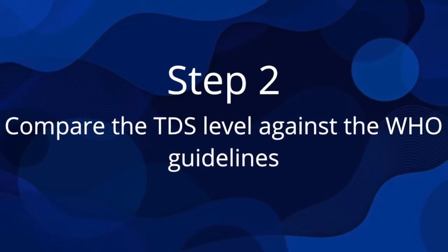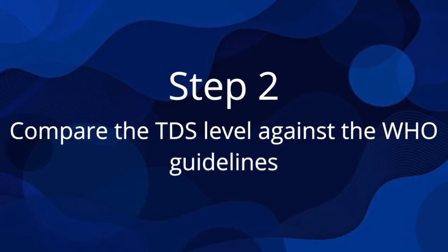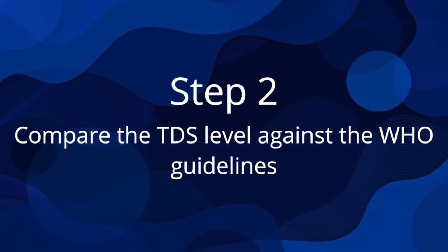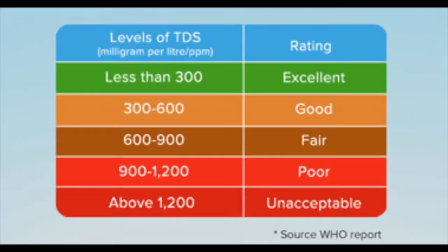Step 2: compare the TDS level against the WHO guidelines. The illustration shows TDS level range with ratings according to WHO. TDS level less than 300 is considered excellent for water consumption. 300 to 600 is good. 600 to 900 is fair. 900 to 1200 is poor, and above 1200 is unacceptable.